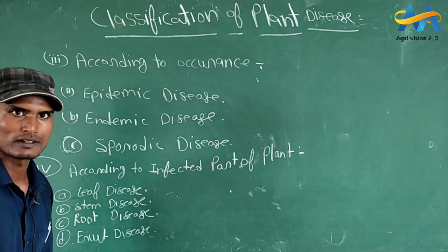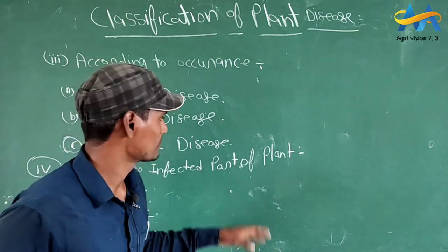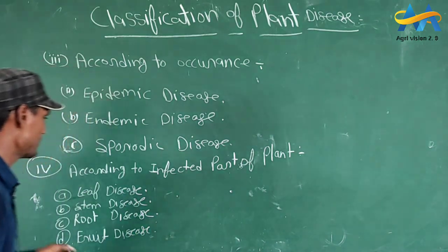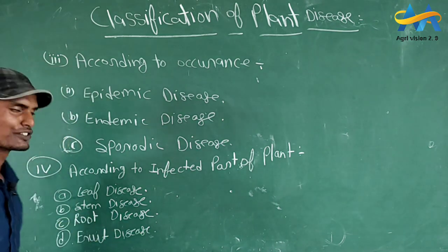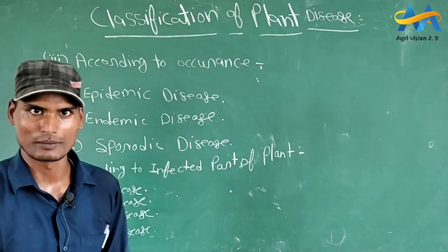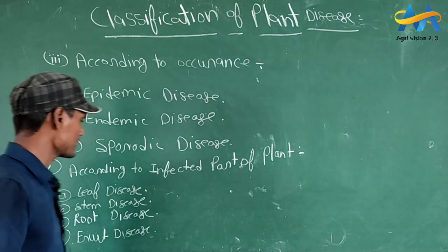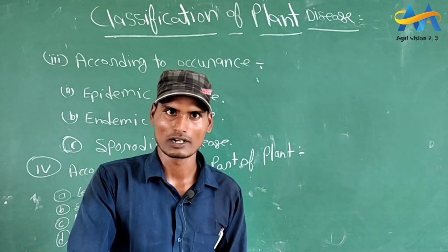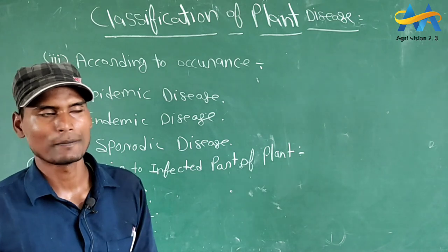Next and fourth classification of plant disease is according to infected part of plant - पादप के ग्रसित भागों के आधार पर। जिसमें पहला है leaf disease - पत्तियों पर जितने भी disease हो रहे हैं। Next है stem disease - तने पर कौन-कौन से disease हो रहे हैं। Next है root disease - जड़ में कौन से disease हैं, कौन से pathogen disease development कर रहे हैं। And last है fruit disease - फल पर भी विभिन्न प्रकार के रोग पाए जाते हैं, जो कई प्रकार के pathogen द्वारा develop होते हैं।